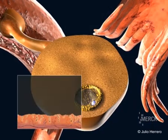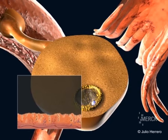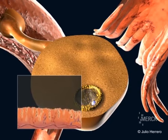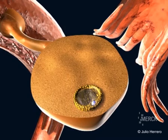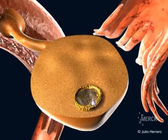The follicle produces estrogen and causes the lining of the uterus, the endometrium, to thicken. Around day 12 to 14 of the cycle, the follicle has grown to the size of about 21 millimeters.